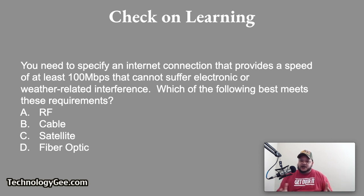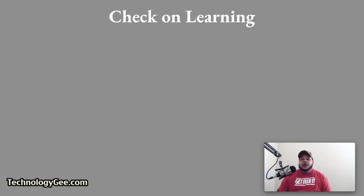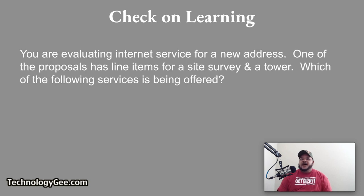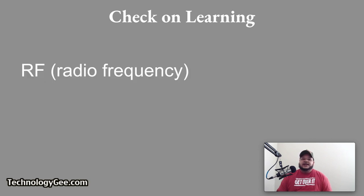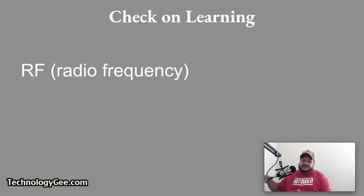Question 2 — You are evaluating internet service for a new address, and one of the proposals has line items for a site survey and a tower. Would it be cellular, RF, cable, or fiber optic? The correct answer is radio frequency. RF primarily relies on line-of-sight communication from the tower to the receiver, which is normally a small antenna on a business or home, in order to receive radio frequency internet.